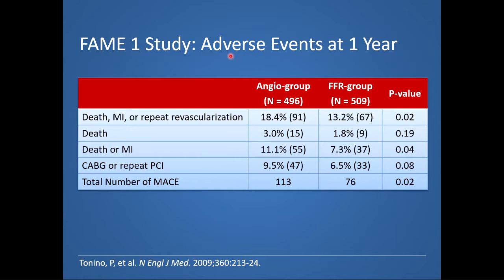When we look at the primary outcome — adverse events at one year: death, MI, or repeat revascularization — more patients in the angio group arm achieved this endpoint at 18.4%, compared to the FFR group, which is statistically significant. We see a statistically significant difference in death between the two groups. In terms of the secondary endpoint of death or MI — though not pre-specified — there were more patients in the angio group achieving this compared to the FFR group. In terms of total major adverse cardiovascular events, less was occurring in the FFR group, which was statistically significant. Importantly, the MI endpoint was not driven solely by periprocedural MIs — 8.7% in the angio group versus 5.7% in the FFR group.